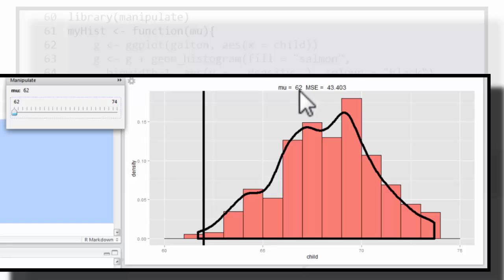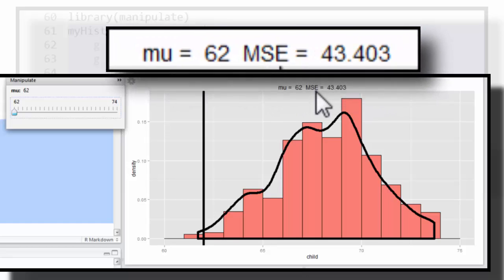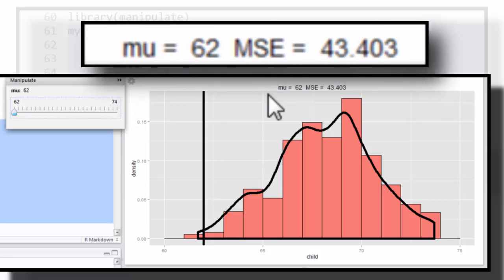Here it's saying the mean is 62 and it gives us the mean squared error. That's a measure of imbalance, how teetering or tottering this histogram is.